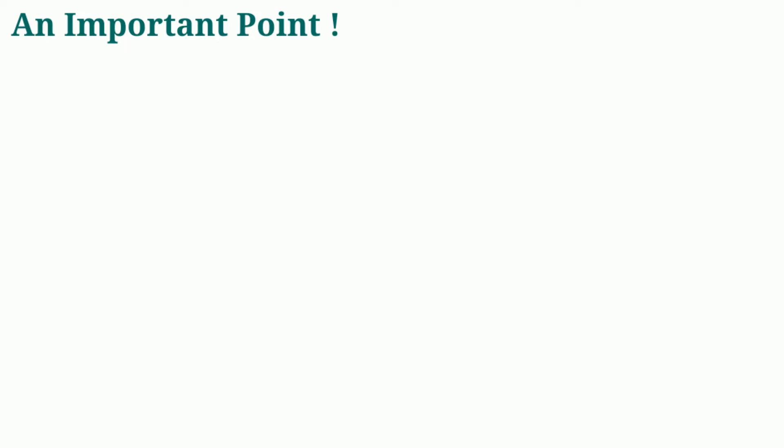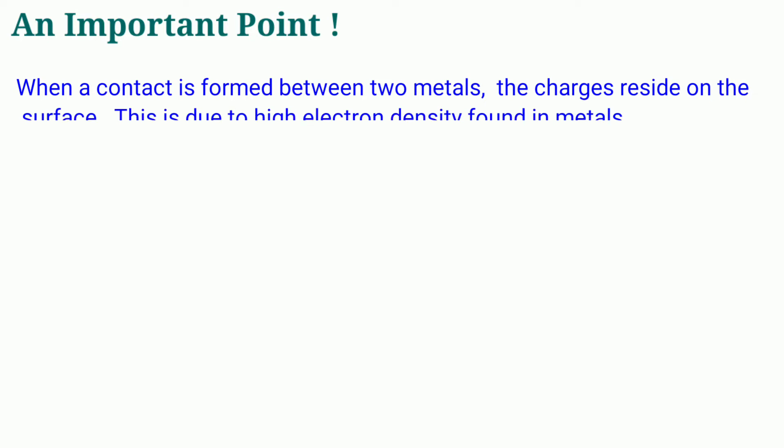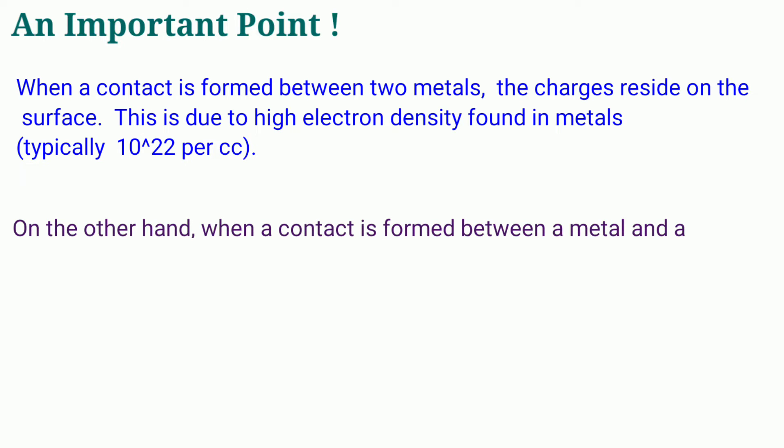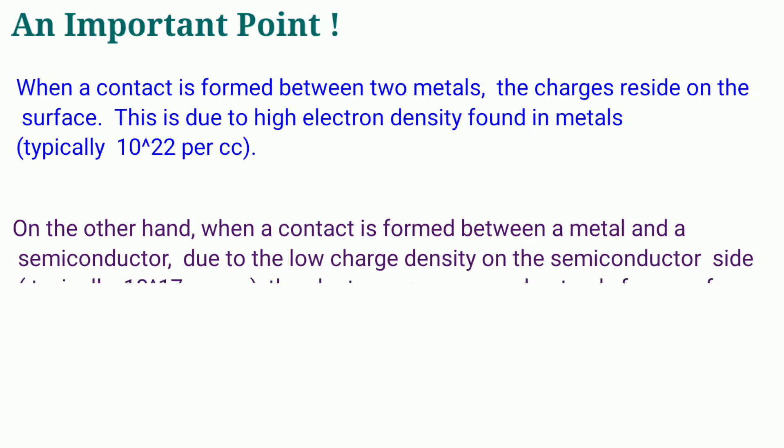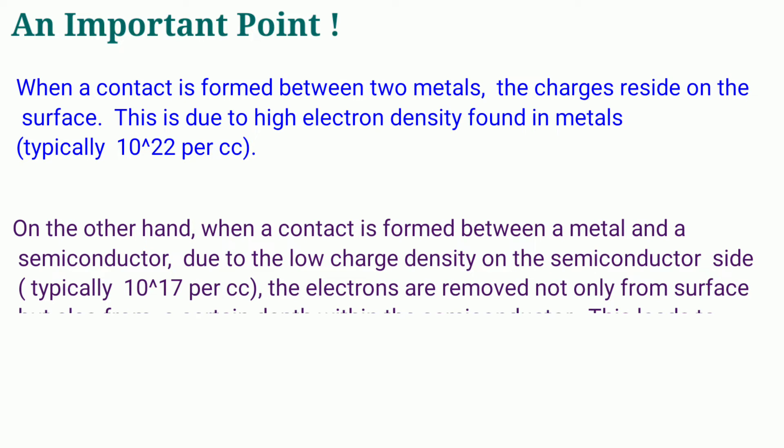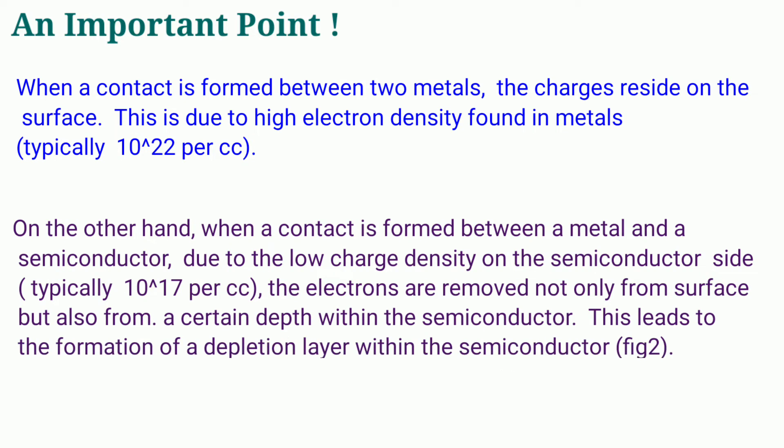When a contact is formed between two metals, the charges reside on the surface due to the high electron density found in metals, typically of the order of 10^22 per cubic centimeter. On the other hand, when a contact is formed between a metal and a semiconductor, due to the low charge density on the semiconductor side, typically of the order of 10^17 per cubic centimeter, the electrons are removed not only from the surface but also from a certain depth within the semiconductor. This leads to the formation of a depletion layer within the semiconductor as shown in the diagram.